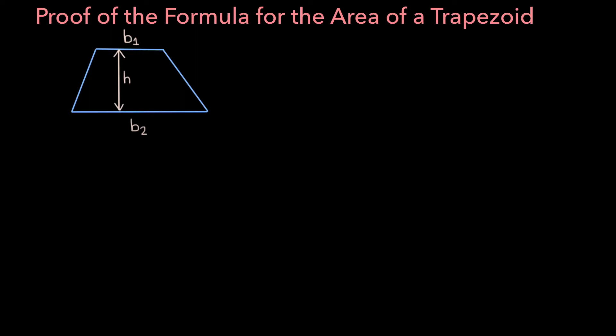In this video, we will be proving the formula for the area of a trapezoid. If we have a trapezoid with bases b1 and b2 and height h, its area can be calculated using the following formula: one half times b1 plus b2 times h. So let's get to proving this formula.